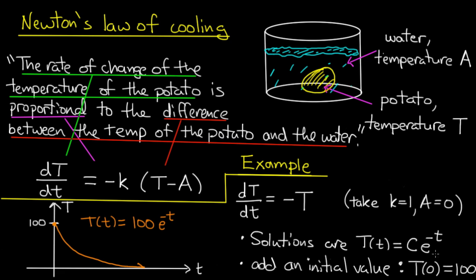So the solution that would represent taking a potato out of boiling water and then putting it into an ice bath would be T of t equals 100 times e to the minus t.